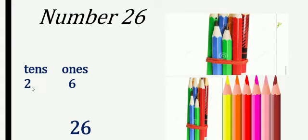And how many loose colors? Six loose colors. We have a bunch of loose colors, so we count them: one, two, three, four, five, and six — six loose colors. So we write six ones. So two, six — twenty-six. This is twenty-six.